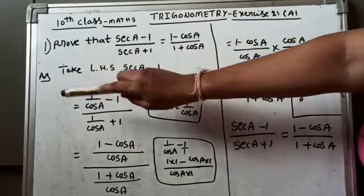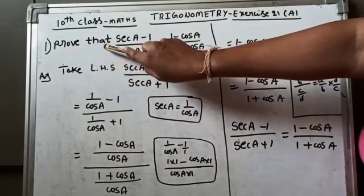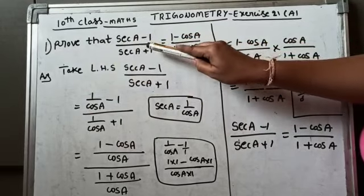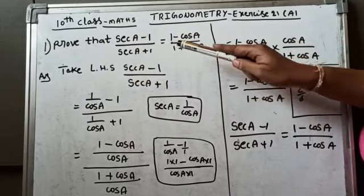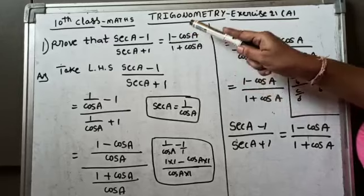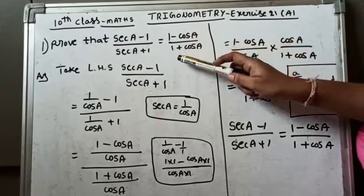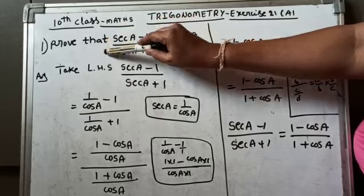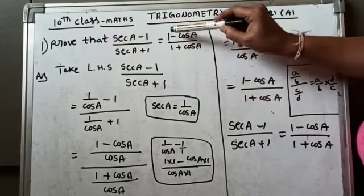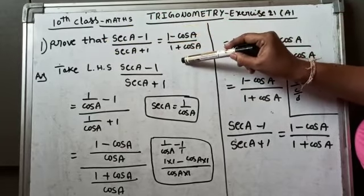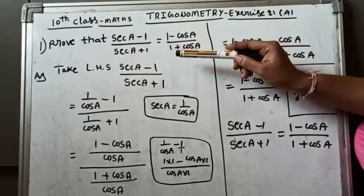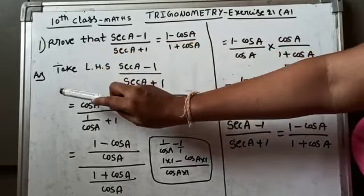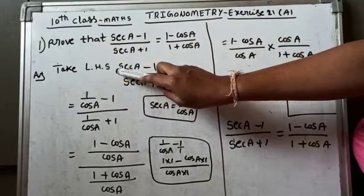First problem: prove that (sec A - 1) / (sec A + 1) = (1 - cos A) / (1 + cos A). This is the LHS part and this is the RHS part. LHS means left hand side. First we have to take the LHS side.